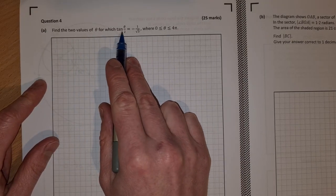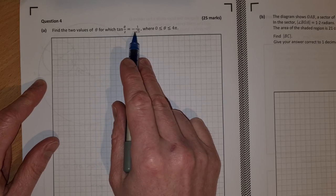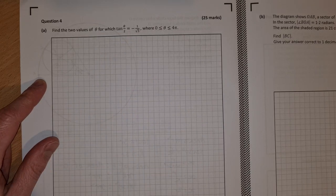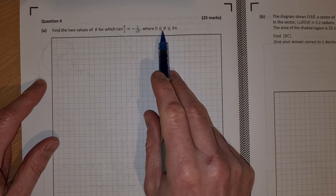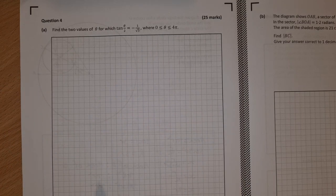Find the two values of theta for which tan of theta over 2 is equal to minus 1 over root 3, where theta is between 0 and 4 pi.